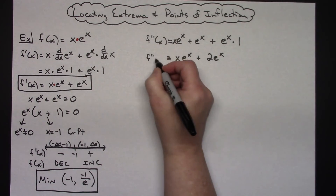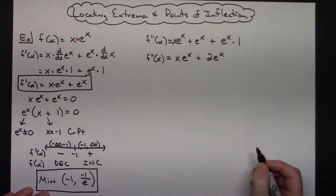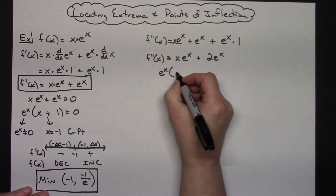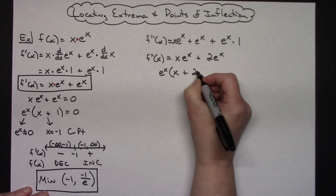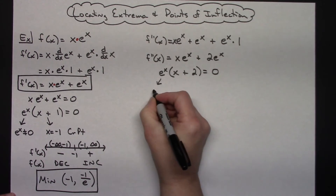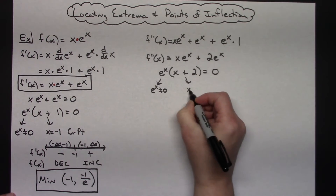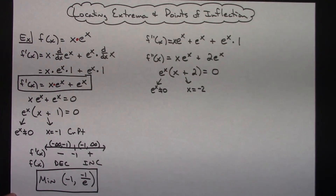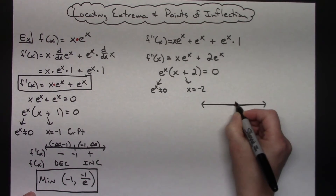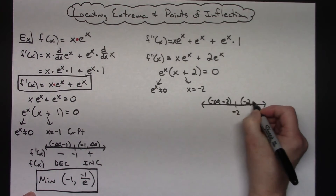Setting the second derivative equal to 0, I factor out e to the x to get e to the x times the quantity x plus 2 equals 0. Again, e to the x cannot equal 0, so setting x plus 2 equal to 0 gives x equals negative 2. That's one possible point of inflection. Drawing the number line with negative 2 gives intervals from negative infinity to negative 2, and negative 2 to infinity.